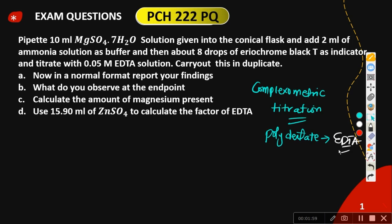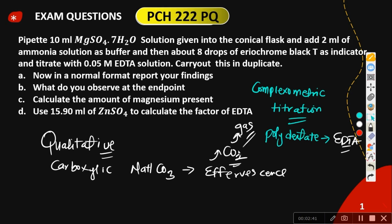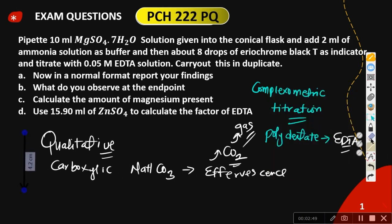During second semester we covered qualitative analysis — how to identify compounds like carboxylic acid. Whenever we add carboxylic acid with sodium hydrogen carbonate and effervescence forms, we know that carboxylic acid is present because of the formation of CO2 gas. In the exam you will be given a table, so learn how to test for esters, carboxylic acid, and so forth very well.